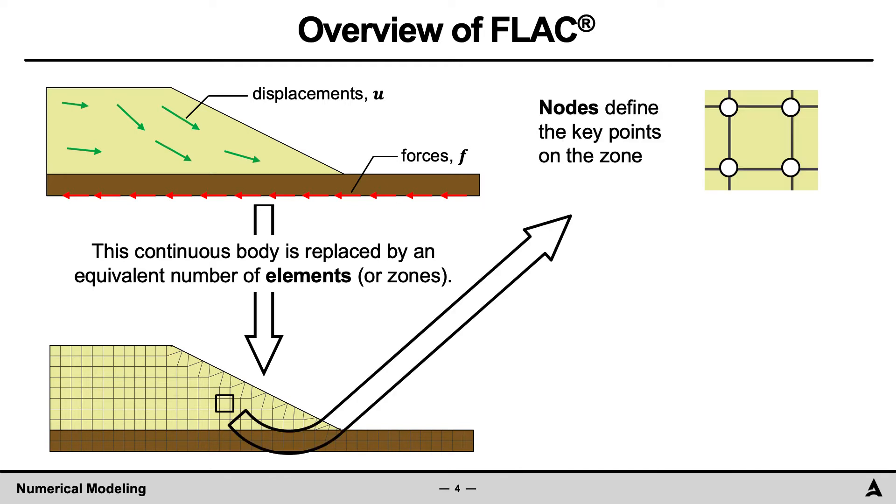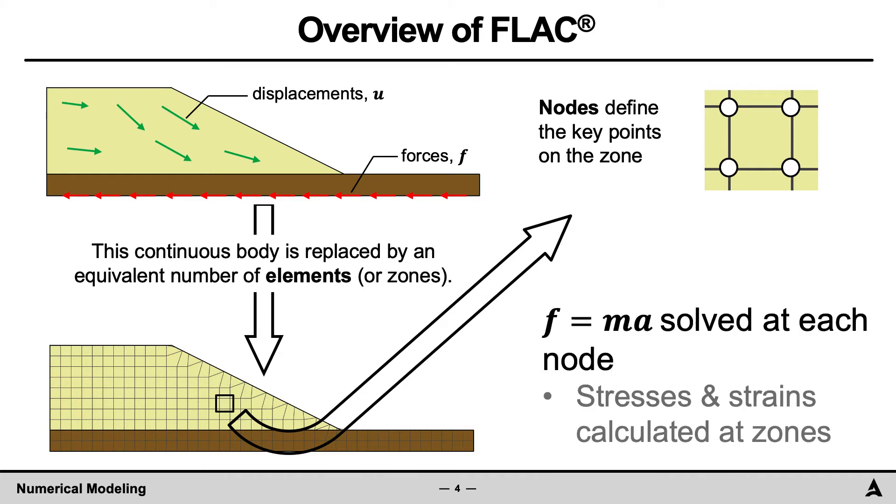Focusing on a single zone, the nodes define the key points. At each node, the equilibrium equation f equals ma is solved. The resulting displacements are calculated at these nodes, whereas the stresses and strains are calculated at the zones.